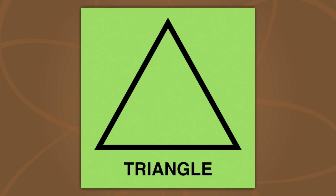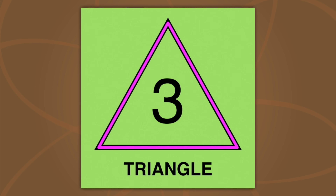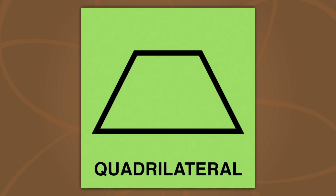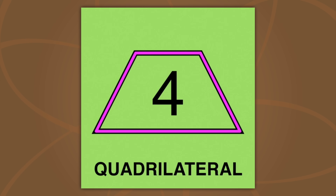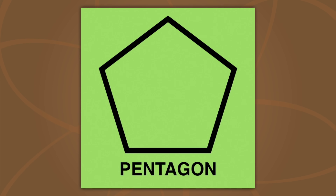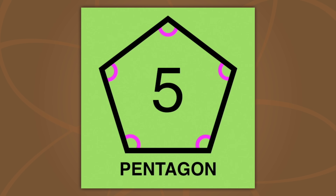A triangle is a polygon with three angles, three sides. A quadrilateral is a polygon with four angles, four sides. A pentagon is a polygon with five angles, five sides.